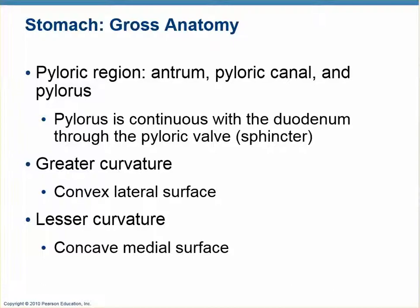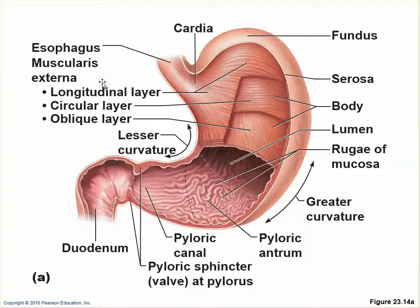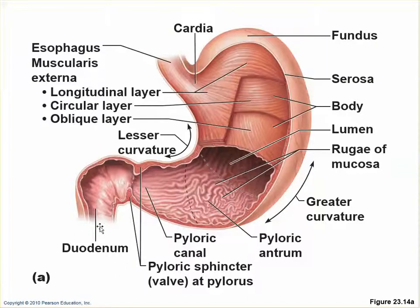There is a greater and lesser curvature. Where the esophagus comes in is the cardia region; above that is the fundus, then the body, then the pylorus, and the pyloric sphincter is the valve at the end. There are three layers in the muscularis: a longitudinal layer, a circular layer, and an oblique layer. It's the only part of the alimentary canal with three layers.